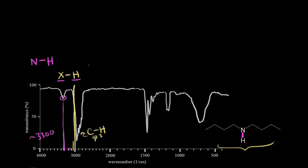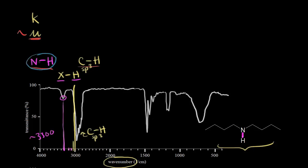Let's compare the strength of that bond to a carbon-hydrogen bond where the carbon is SP3 hybridized. We know that the wave number is dependent on two things from an earlier video: the force constant K, or spring constant K, and the reduced mass. The reduced mass for these two bonds is approximately the same. So it must be the force constant K. Since the nitrogen-hydrogen bond signal shows up at a higher wave number, that must mean it's a stronger bond, because if you increase the force constant and the strength of the bond, you increase the wave number and frequency.